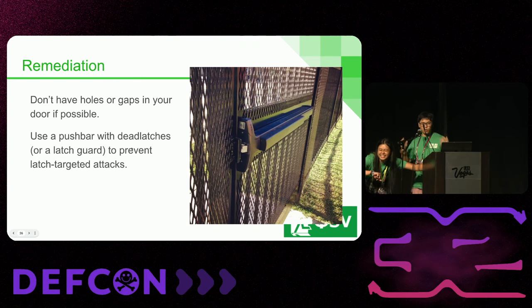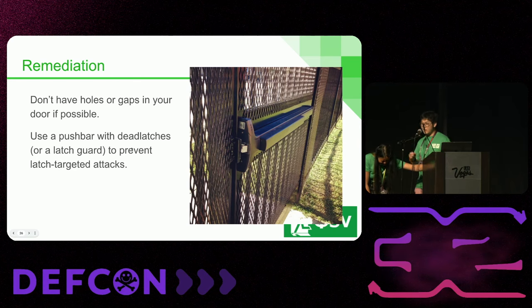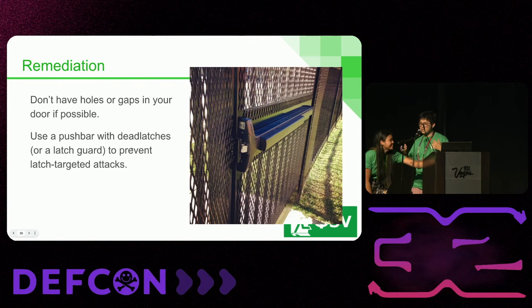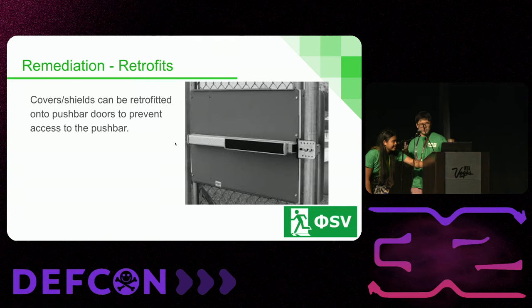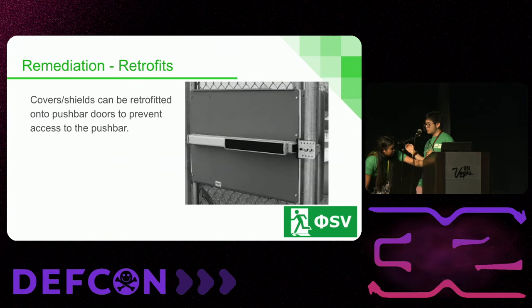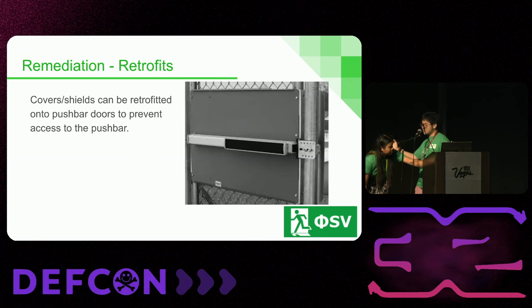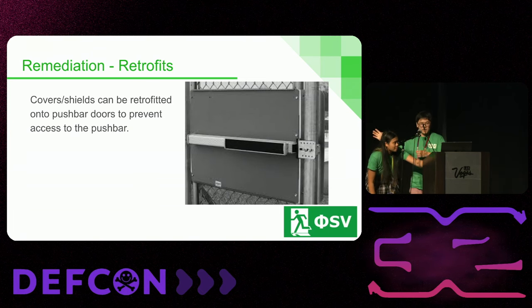For pushbars, the main thing is don't have holes or gaps in your door. If possible, use a pushbar with dead latches to prevent latch targeted attacks. There are also retrofits available. We had a video — on a red team engagement, someone was able to reach their hand around and push on the pushbar from the other side. You can see the retrofit here — they can be bypassed, but it makes it a lot harder. You can also use bar guards to further prevent bypasses.